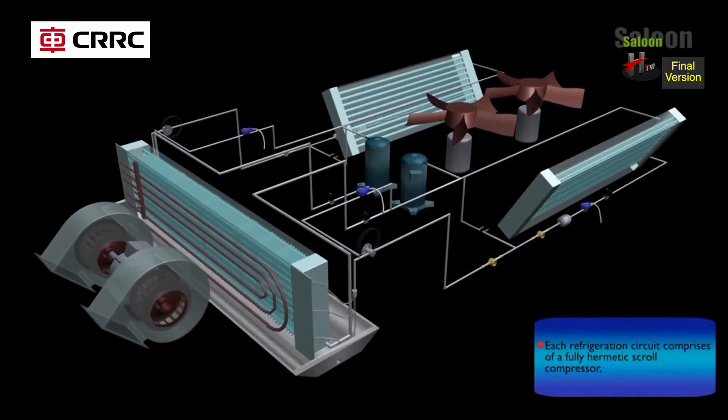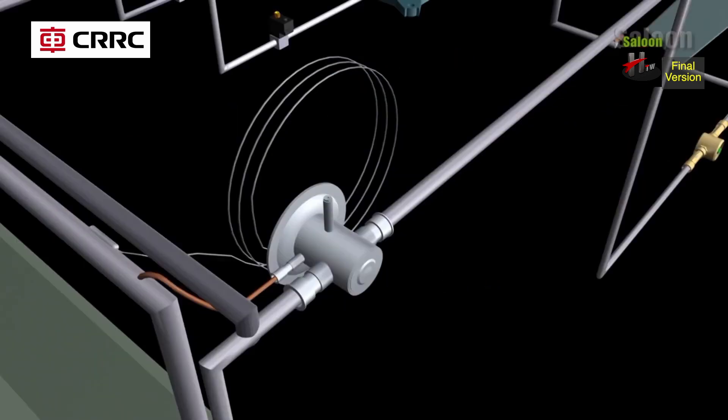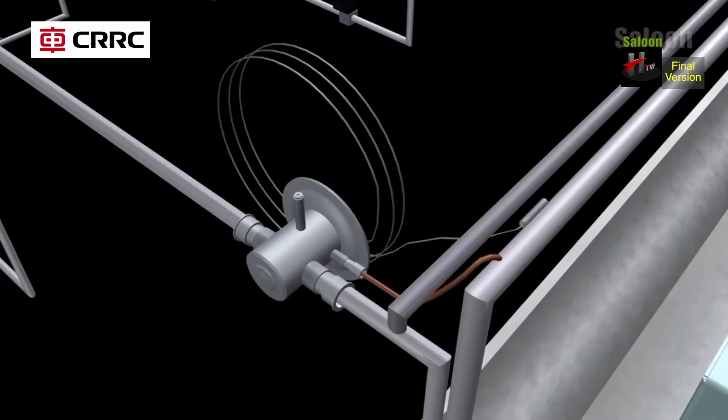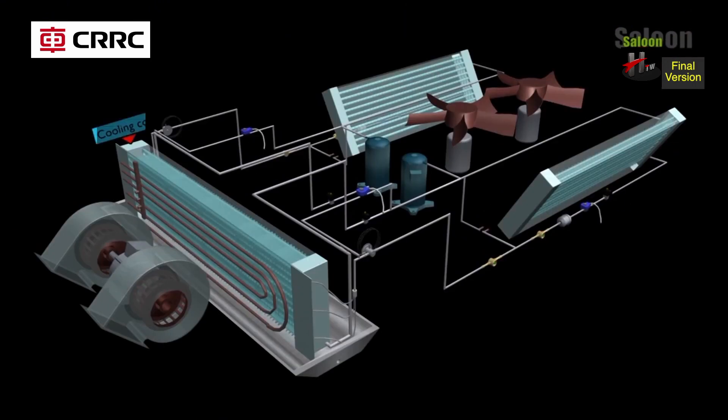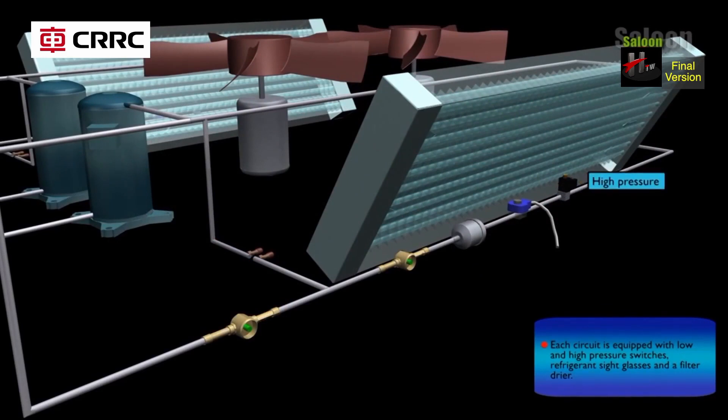Each circuit comprises of a scroll compressor, a condenser coil, condenser fans, a thermal expansion valve, and a cooling coil or evaporator. Each circuit is equipped with low and high pressure switches, refrigerant side glasses, and a filter dryer.